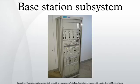The base station controller provides, classically, the intelligence behind the BTSs. Typically a BSC has tens or even hundreds of BTSs under its control. The BSC handles allocation of radio channels, receives measurements from the mobile phones, and controls handovers from BTS to BTS. A key function of the BSC is to act as a concentrator where many different low-capacity connections to BTSs become reduced to a smaller number of connections towards the mobile switching center.